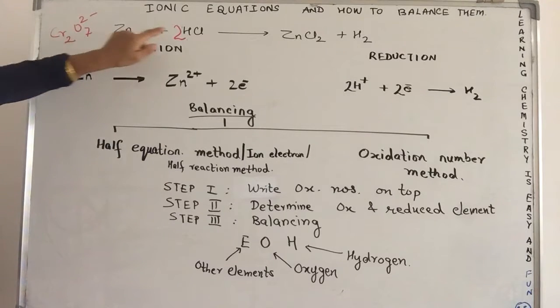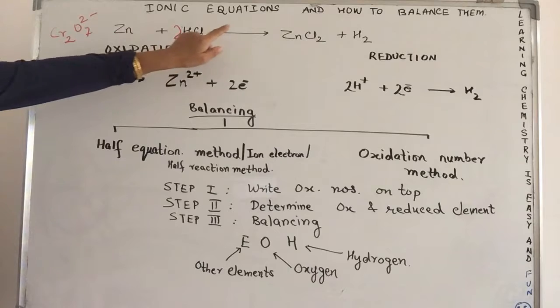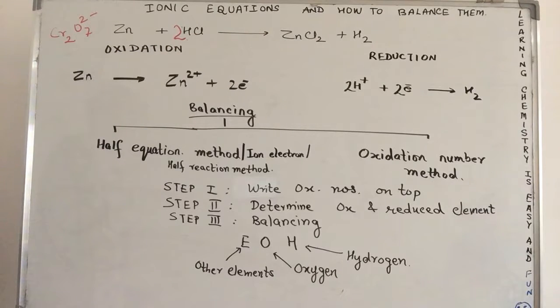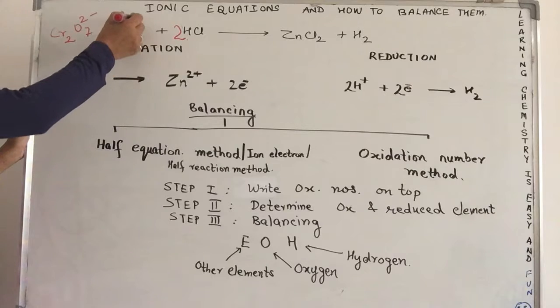you also need to be careful about the charges or the number of electrons involved on both sides. If you see this particular equation, Zn plus HCl gives you ZnCl2 plus hydrogen, let me try and write the charges or the oxidation states more specifically. Let me write the oxidation state of each element on top.